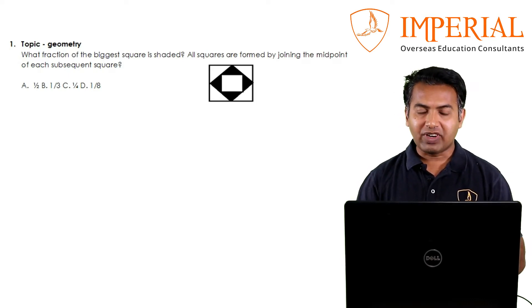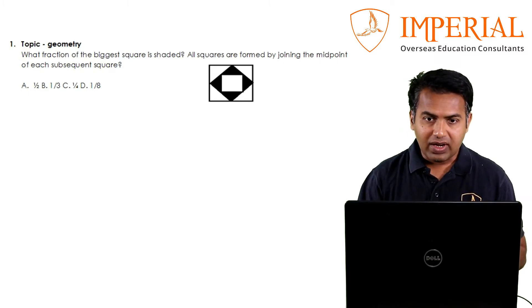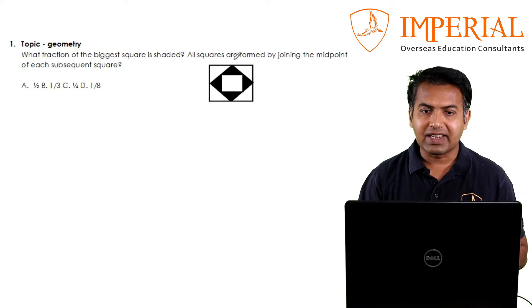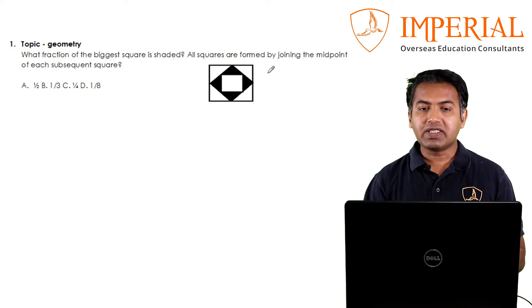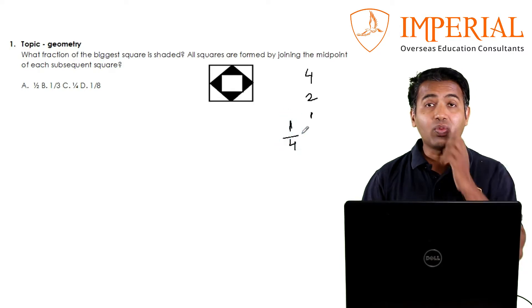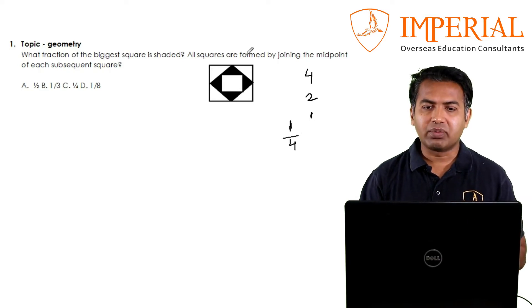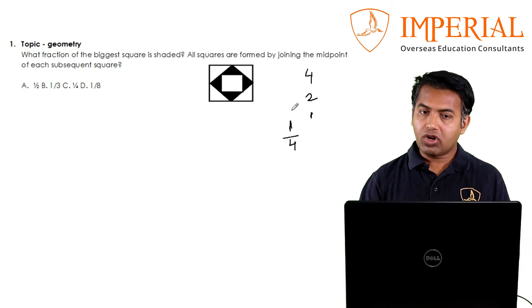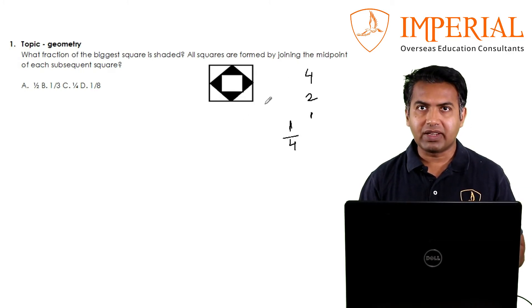There are different ways of solving it. One way is to look at the area. If I consider the biggest square's length as x, then this will be x by 2, x by 2. This will be x by 2 root 2. What happens with that concept is the area becomes half every time you go inside. If I start with 4, then this inner square area will be 2, and this inner square will be 1. The shaded area will be this square minus this square, so 2 minus 1 equals 1, and the answer will be 1 by 4.